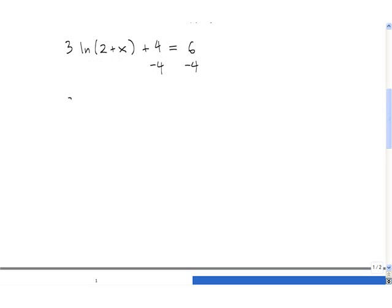We get 3 times the natural log of 2 plus x equals 2. And now we need to divide both sides by 3 to get rid of this 3 in front. So this side simplifies to just natural log of 2 plus x equals 2/3.